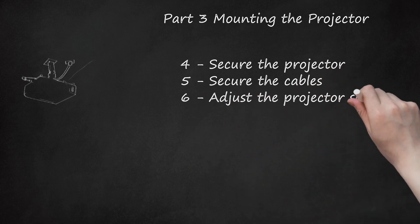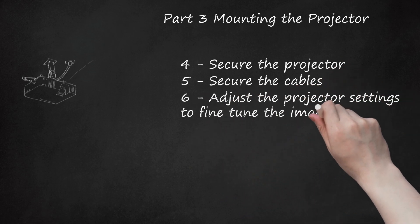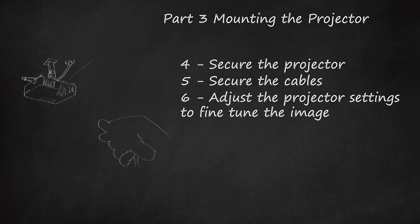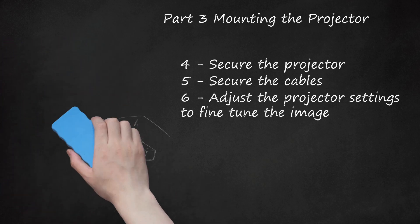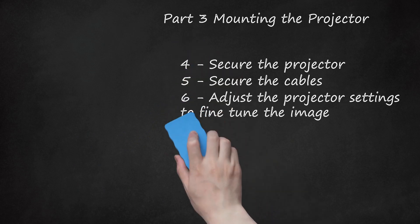6. Adjust the projector settings to fine-tune the image. Turn on the projector and follow the instruction manual to adjust the zoom, lens shift, and focus to the desired settings. Follow the instruction manual to set the desired contrast, color, and brightness on the projector. Before going into fine-tuning, adjust the image so that it is as close to accurate as possible. This will ideally save you some time and frustration while fine-tuning.